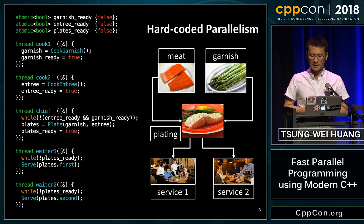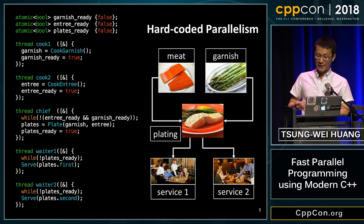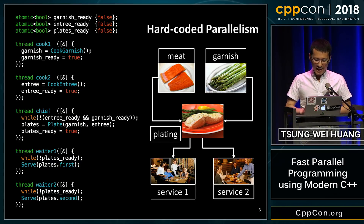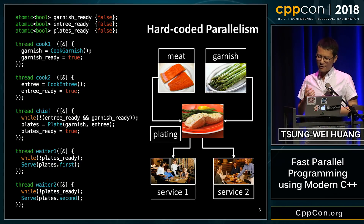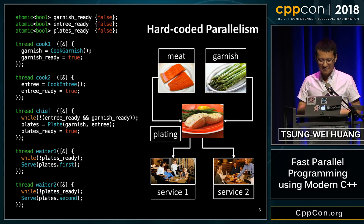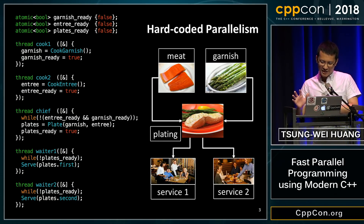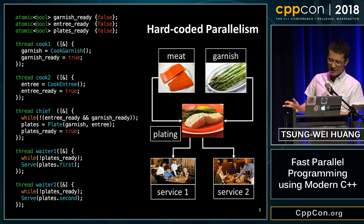In terms of the C++ code, we usually create five tasks to represent our kitchen brigade: cook one, cook two, chef, waiter one, and waiter two. Then we create three variables initialized to false to represent the readiness of these dishes. When cook one finishes the garnish, he marks the variable to true. Similarly, when cook two finishes the meat, he marks the variable to true.